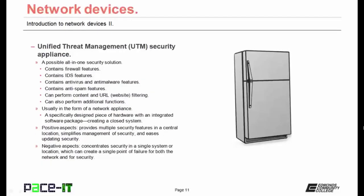Then there's the Unified Threat Management Security Appliance, or UTM Security Appliance. It is a possible all-in-one security solution. It may contain firewall features, IDS features, antivirus and anti-malware features, anti-spam features, and can perform content and URL filtering. It all depends upon what kind of UTM you purchase — you can get all of those features in one package, usually in the form of a network appliance.